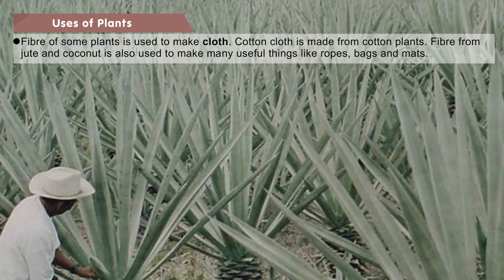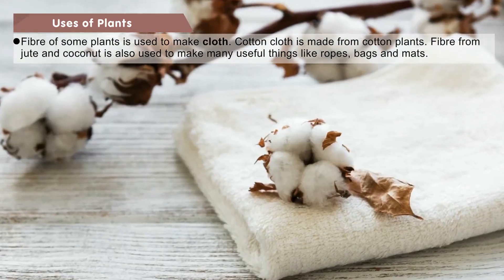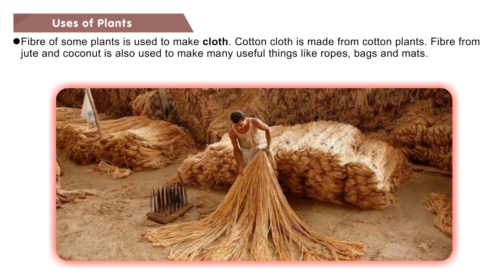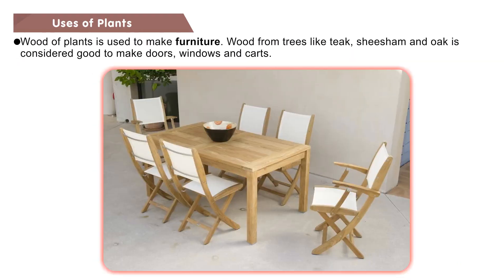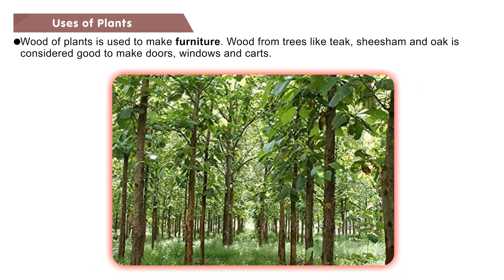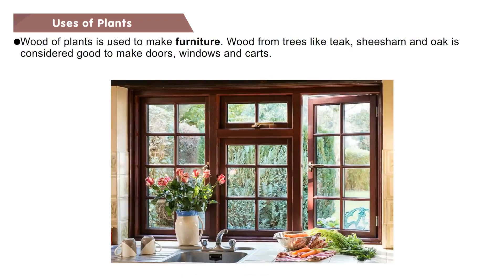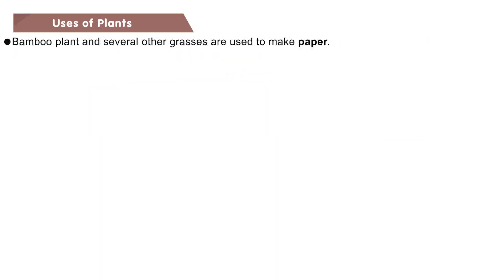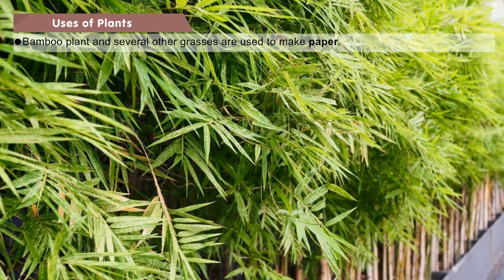Fibre of some plants is used to make cloth. Cotton cloth is made from cotton plants. Fibre from jute and coconut is also used to make many useful things like ropes, bags and mats. Wood of plants is used to make furniture. Wood from trees like teak, shisham and oak is considered good to make doors, windows and carts. Bamboo plant and several other grasses are used to make paper.